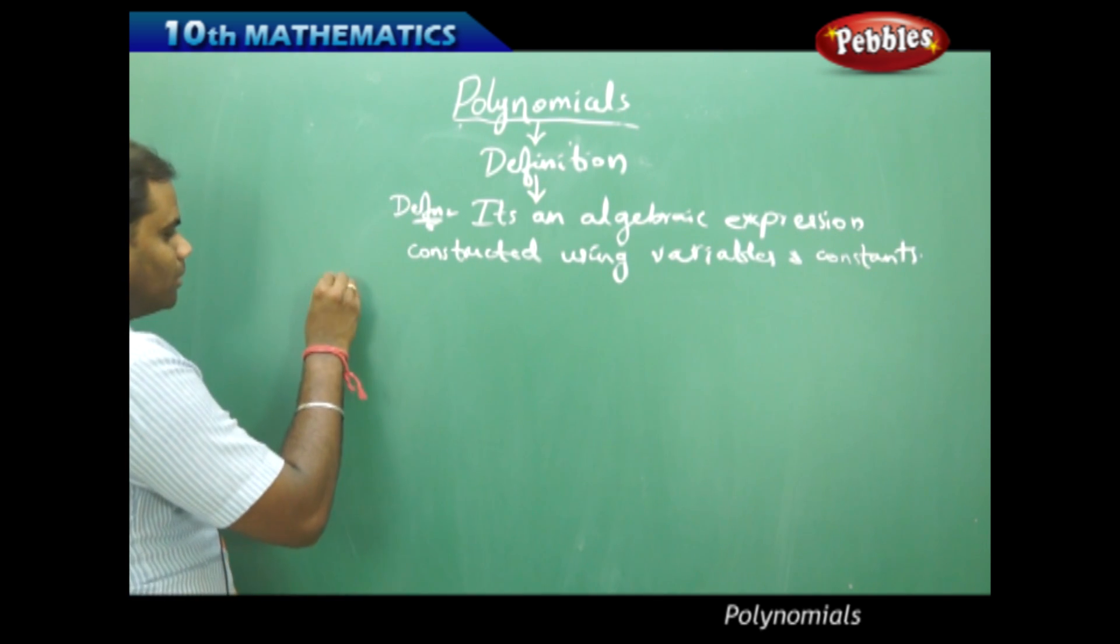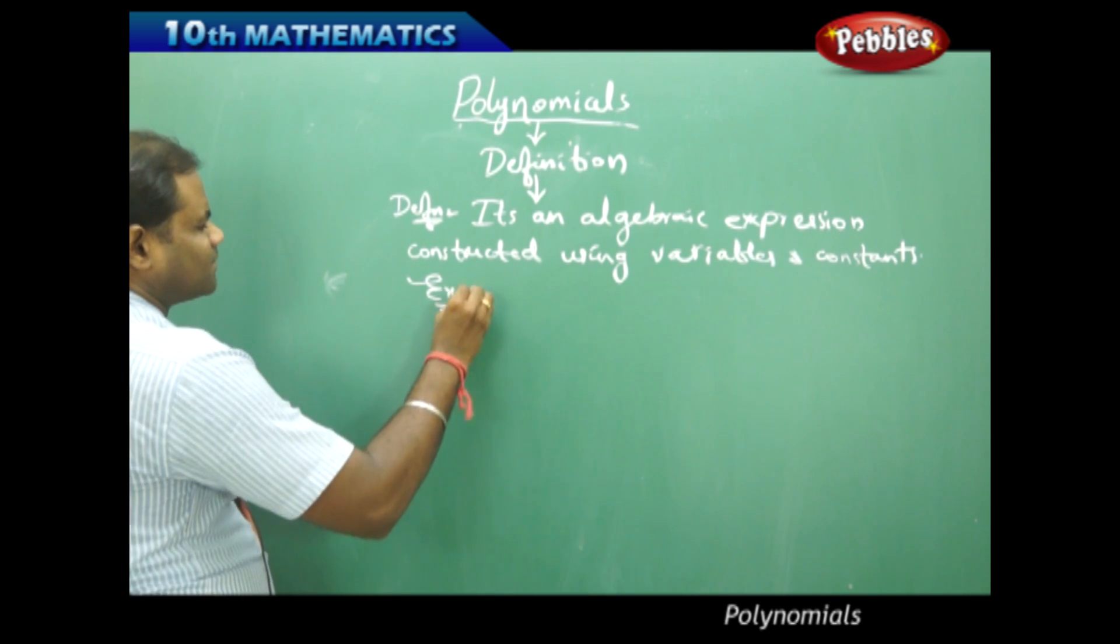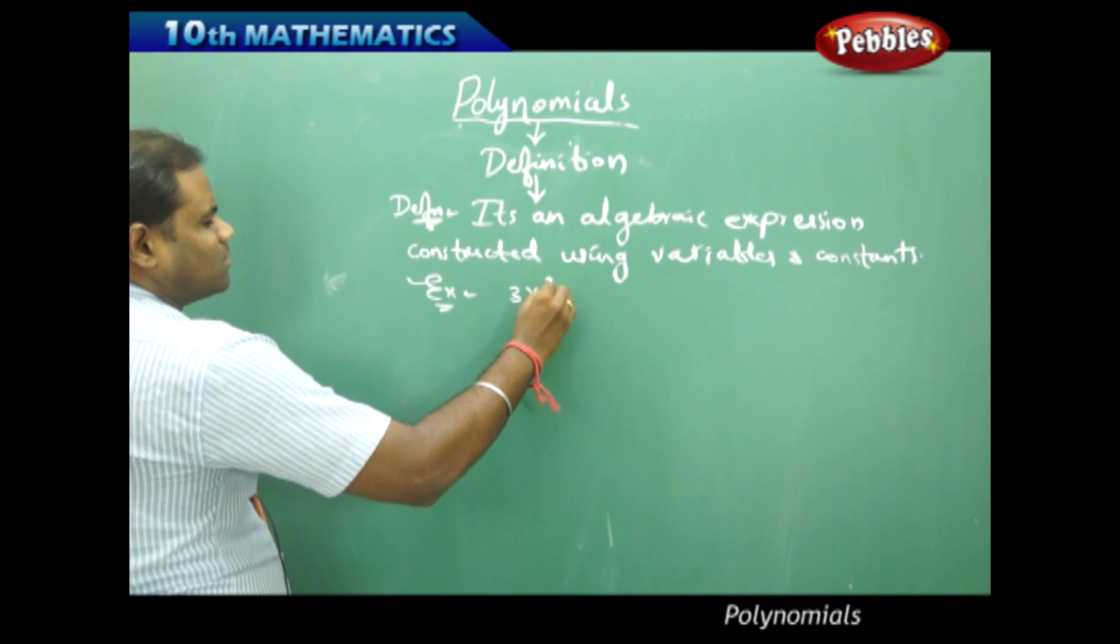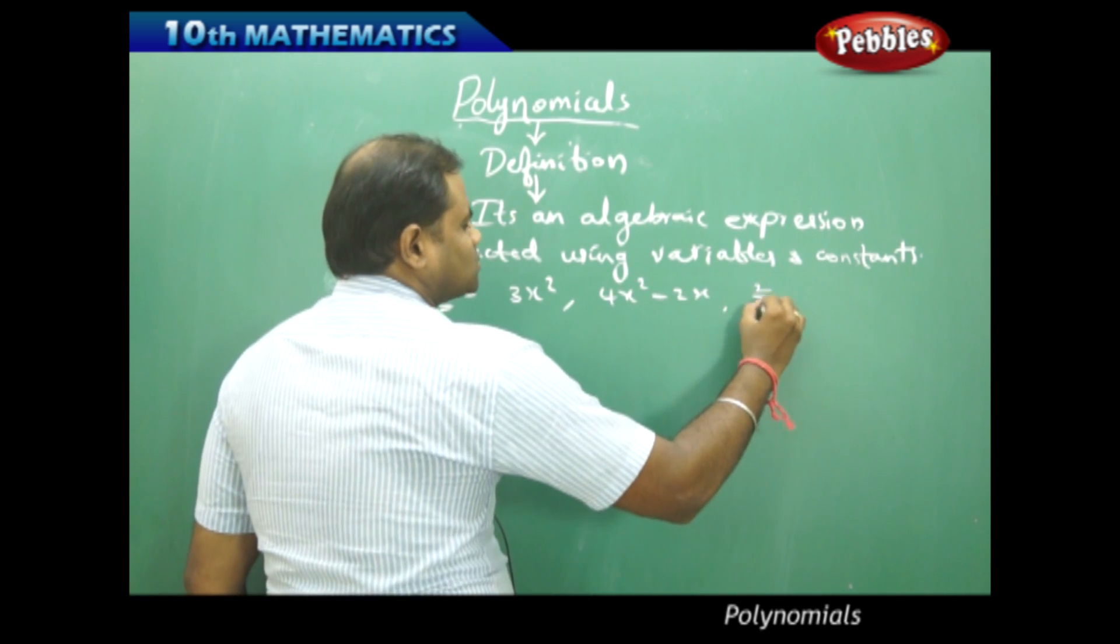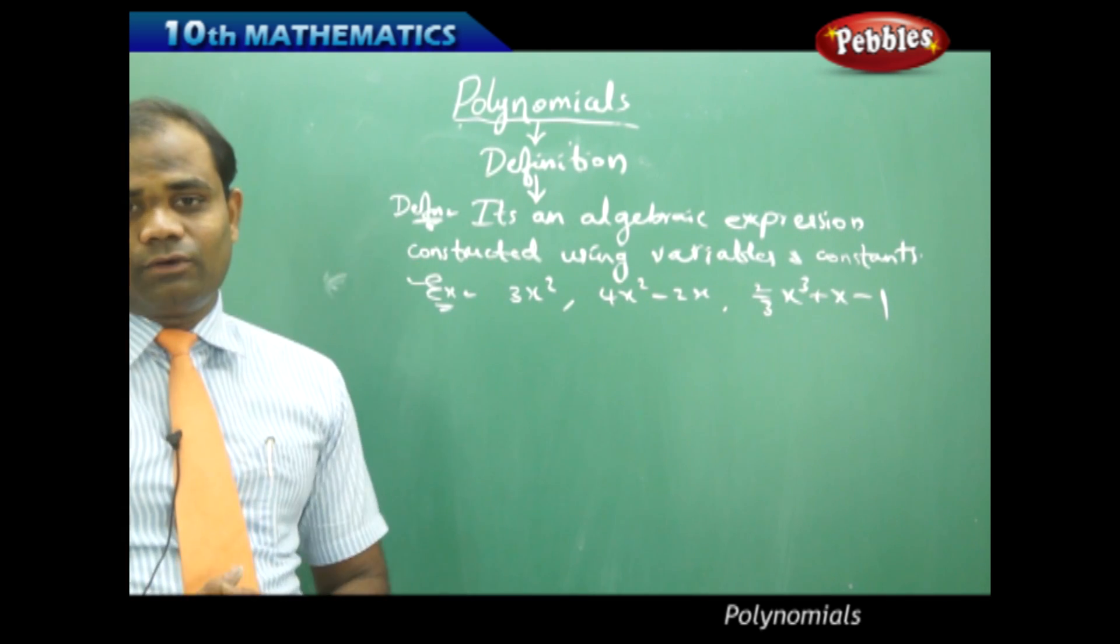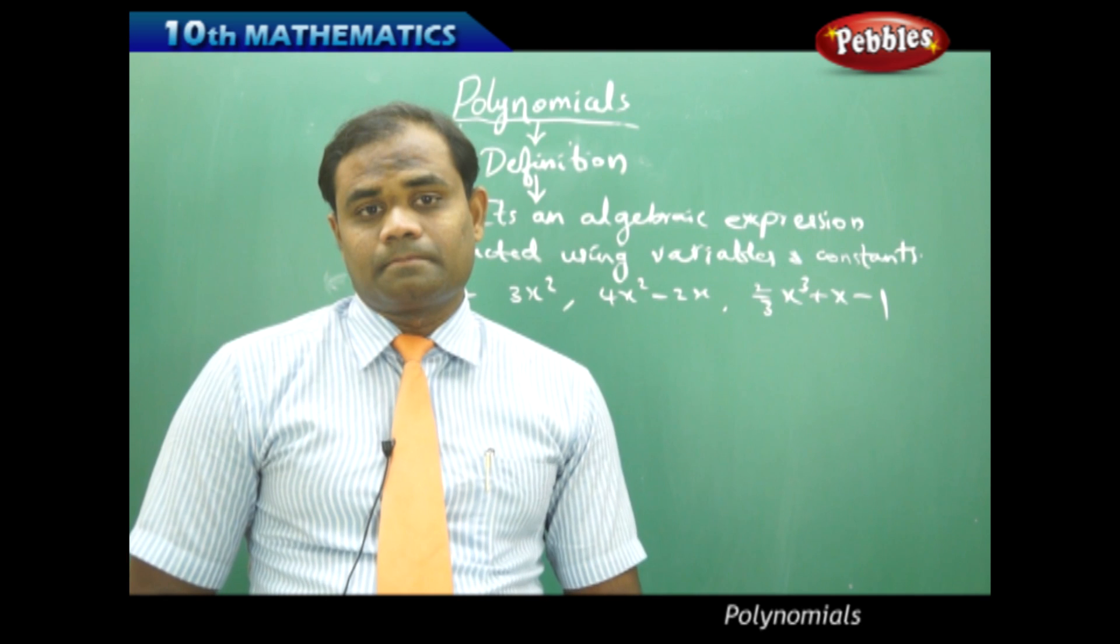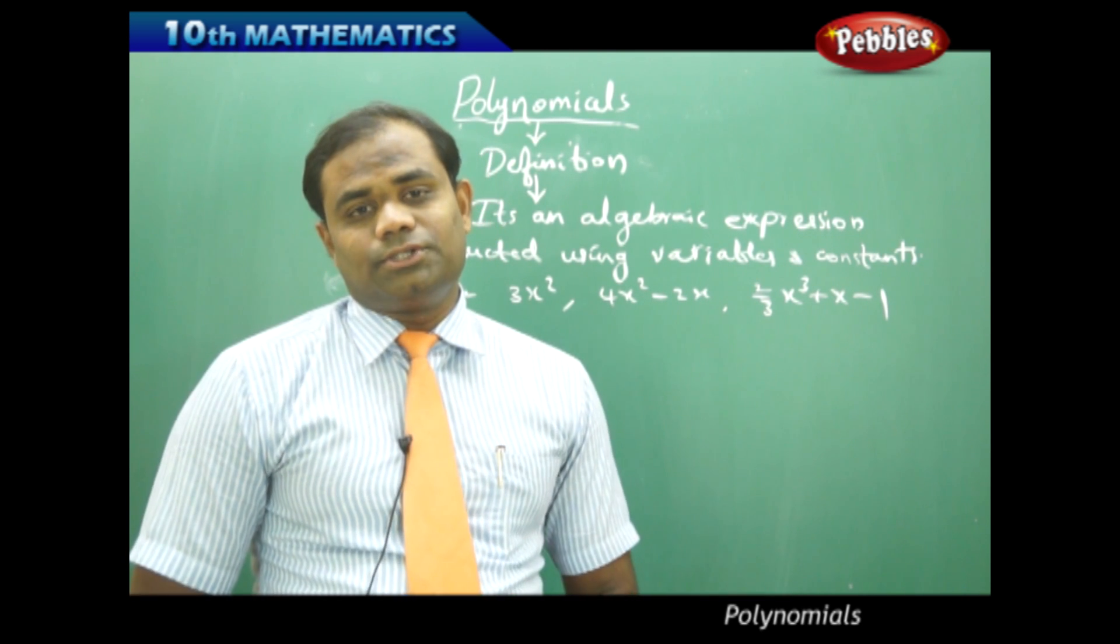Therefore if I see a polynomial for example, 3x square, 4x square minus 2x plus 2, or 2/3 x cube plus x minus 1 are all examples of polynomials. This is how we understand the polynomials in general.